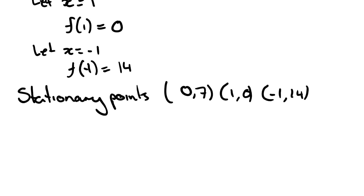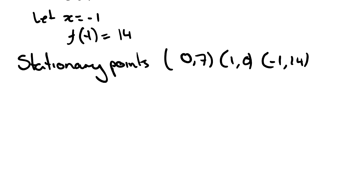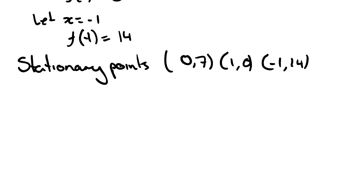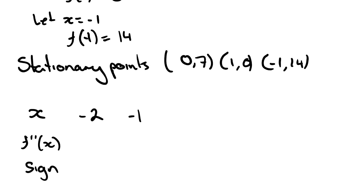Now we need to determine what type of points these are — whether they are horizontal inflection points. In the same way as in the previous video, we write out a table with x, the second derivative, and the sign. Because the x values are close together, we can use one table with values: negative 2, negative 1, negative 0.5, 0, 0.5, 1, and 2.